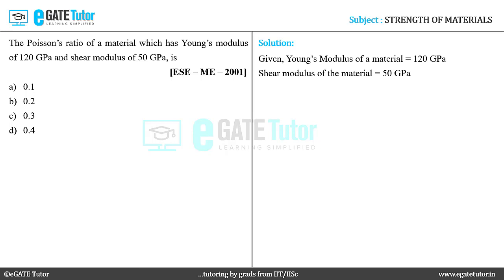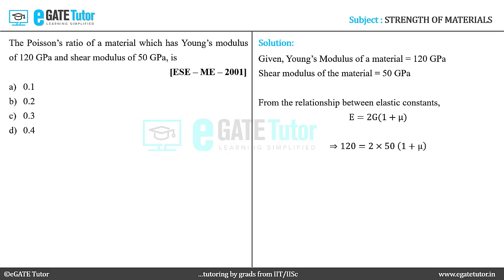We have to find out the Poisson's ratio. Let us assume that the Poisson's ratio is mu. From the relationship between the elastic constants, we have E = 2G(1 + mu). Here E = 120 gigapascal and G = 50 gigapascal.